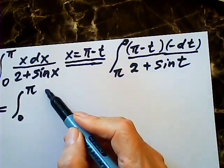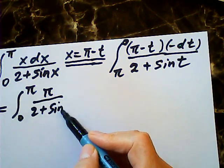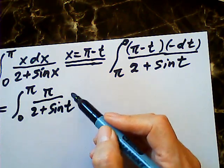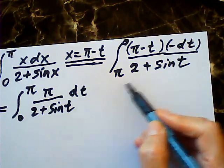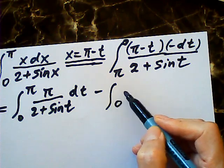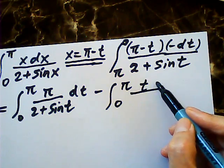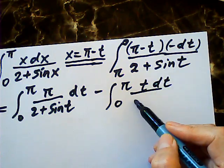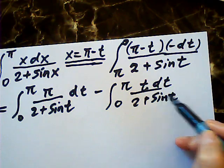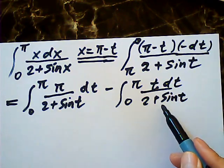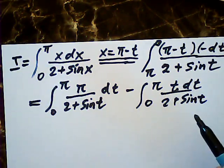For the first one is pi over two plus sine t dt, right? And the other one is from zero to pi, t dt over two plus sine t. This integral is same as a given integral, right? x and t just dummy variable.